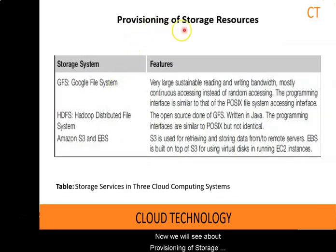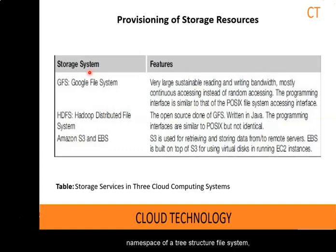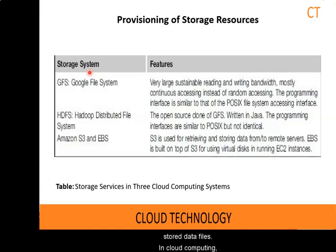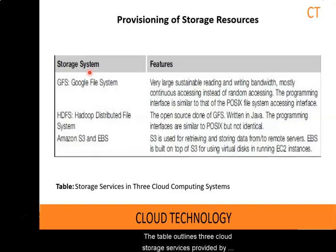Now we will see about provisioning of storage resources. The distributed file system is very important for storing logistical data. However, other forms of data storage also exist. Some data does not need the namespace of a tree structure file system, and instead databases are built with stored data files. In cloud computing, another form of data storage is key-value pairs. Amazon S3 service uses SOAP to access objects stored in the cloud. The table outlines three cloud storage services provided by Google, Hadoop, and Amazon.